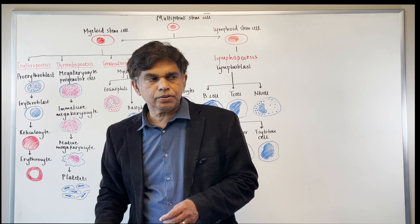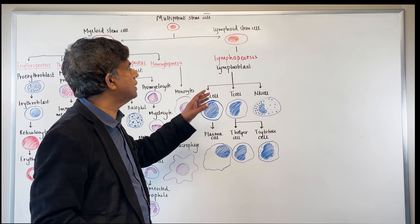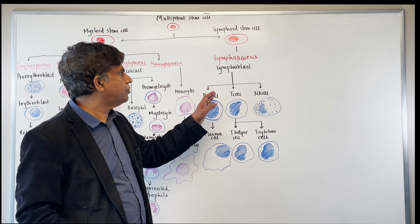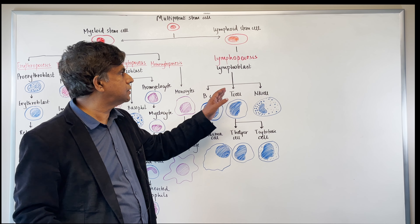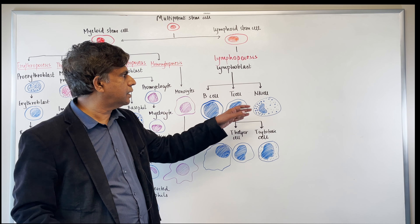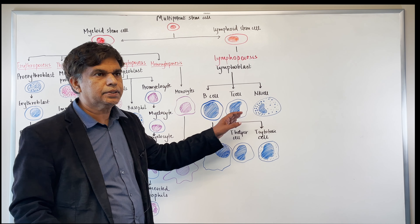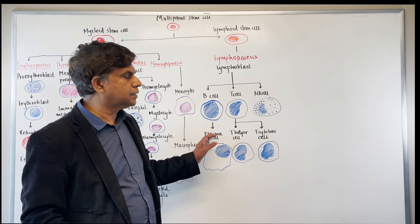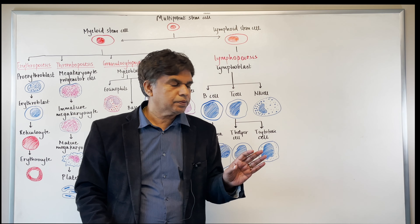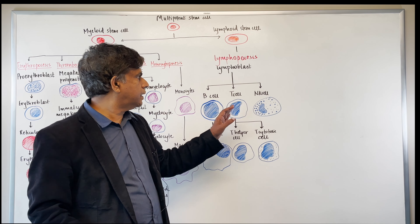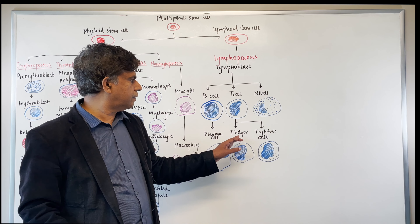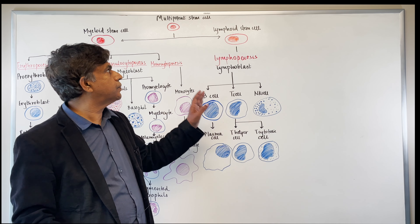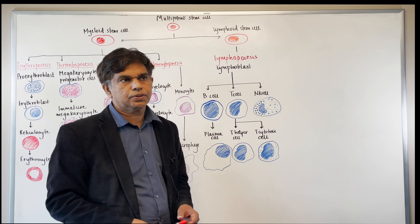On the lymphoid side, you have the lymphoid stem cell, then lymphopoiesis, then lymphoblasts, and then B cells, T cells, and natural killer cells. Plasma cells come from B cells. From T cells, you have T helper cells and T cytotoxic cells — all developing from the lymphoid stem cell.